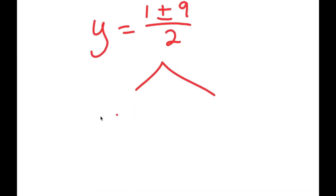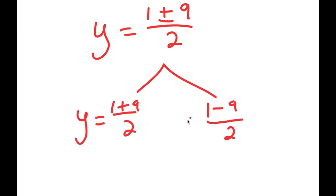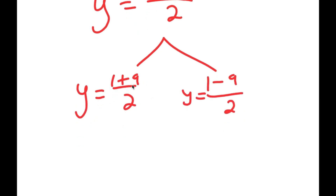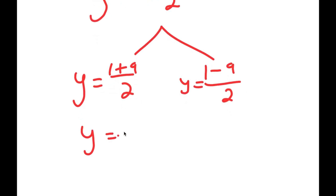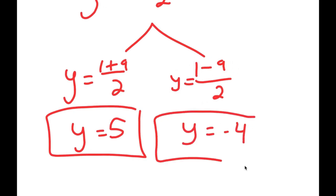So I get y is equal to 1 plus or minus 9 over 2. This gives me two solutions: y equals 1 plus 9 over 2, and y equals 1 minus 9 over 2. So 1 plus 9 is 10, and 10 divided by 2 is 5, giving y equals 5. And 1 minus 9 is negative 8, negative 8 over 2 is negative 4, so y equals negative 4 is another solution.